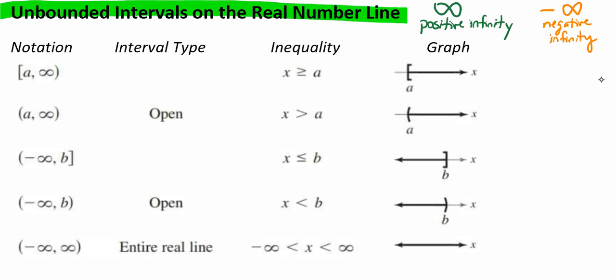As before, we're going to be using brackets and parentheses. In our first example, we have a bracket, a comma, infinity, and then a parentheses. Any time we have a positive infinity or a negative infinity, the symbol that accompanies it is going to be a parentheses, because you cannot include infinity. Because we have a bracket and a parentheses here, that doesn't mean we have any specific interval type. It means x is greater than or equal to A, and when we graph that, we use a bracket at A.